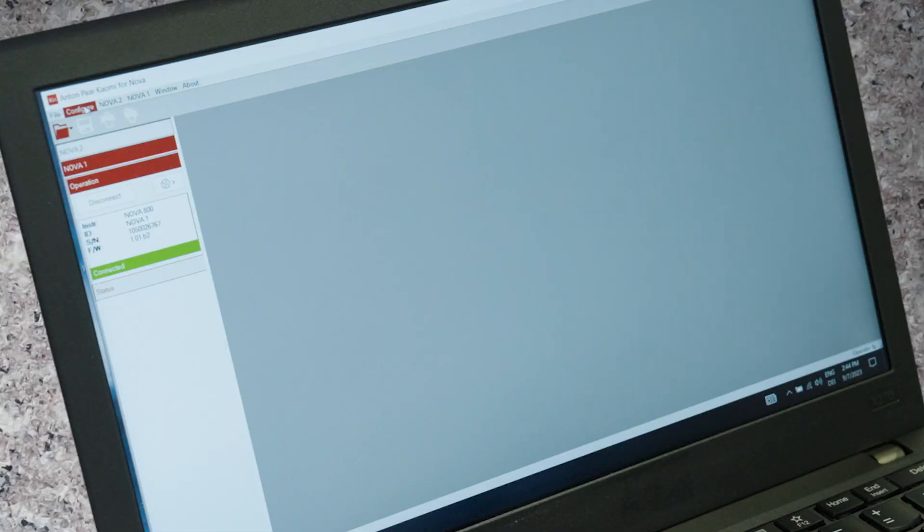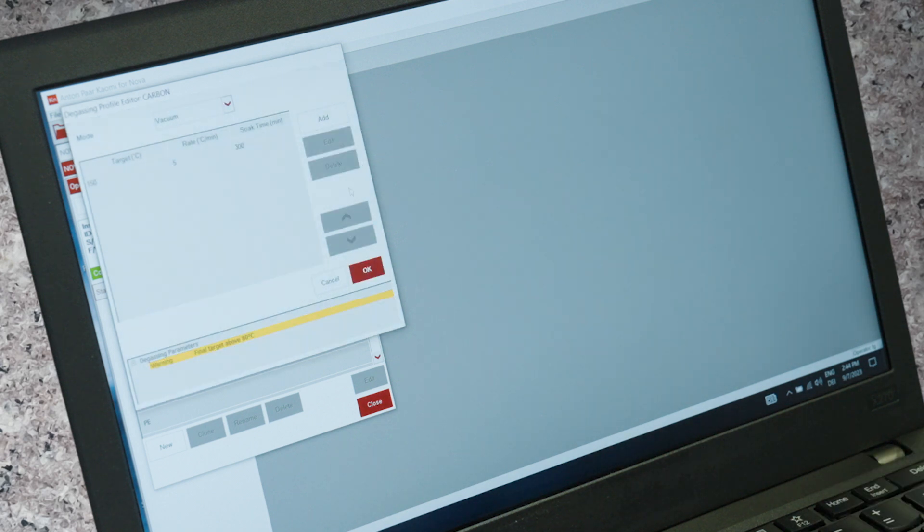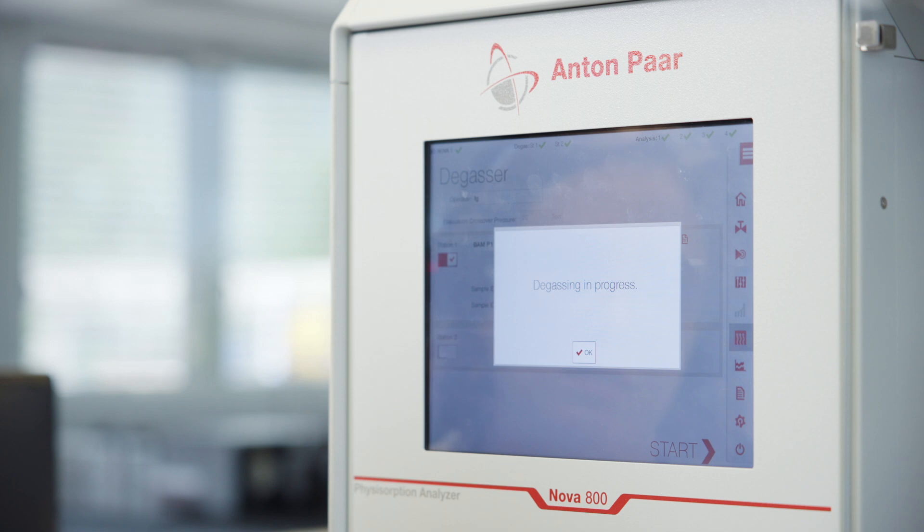With the instrument control, select the degassing profile, where you would enter the target temperature, the heating rate, and the soak or hold period. Degassing time varies by sample, but for electrode materials it is usually done within 6 hours to overnight, and you can monitor the degassing status in real time on the touch screen or in the software.